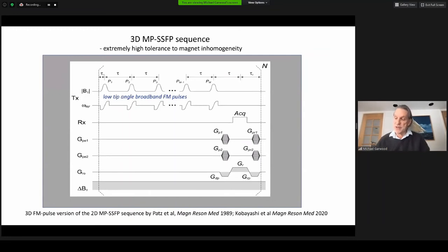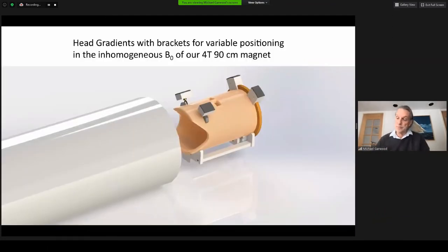Here is one pulse sequence we will use to perform MRI with extreme magnetic field non-uniformity. It is a 3D version of the missing pulse steady-state free precession sequence developed by Pats et al. To demonstrate its tolerance to field inhomogeneity, we modified a standard head gradient set so that it could be mounted far from the isocenter of our 4-Tesla magnet where the field is rapidly dropping off.